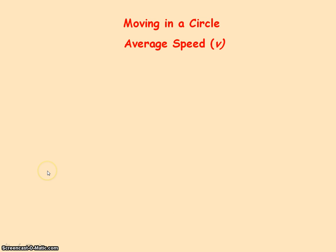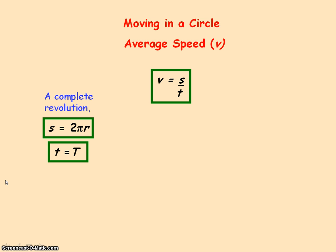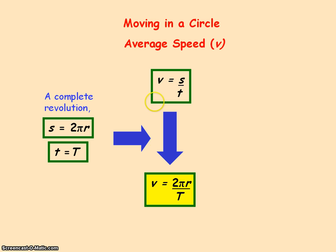To determine the average speed of the object moving in a circle, we use the definition of speed, which is the distance travelled divided by the time taken. For one complete revolution, distance travelled is 2πr and the time it takes is equal to the time period. Substituting these into our equation for average speed, we get average speed equals 2πr divided by the time period.